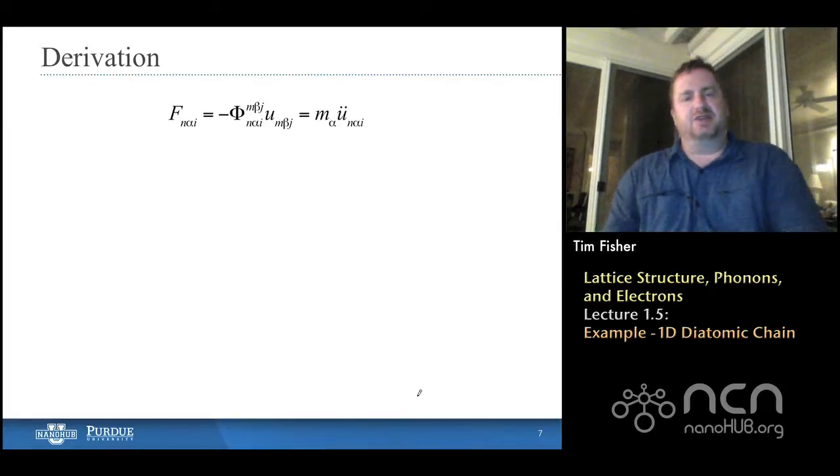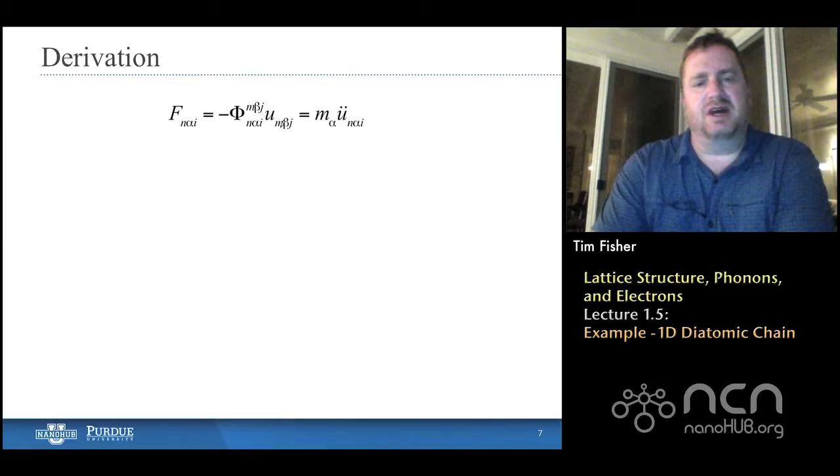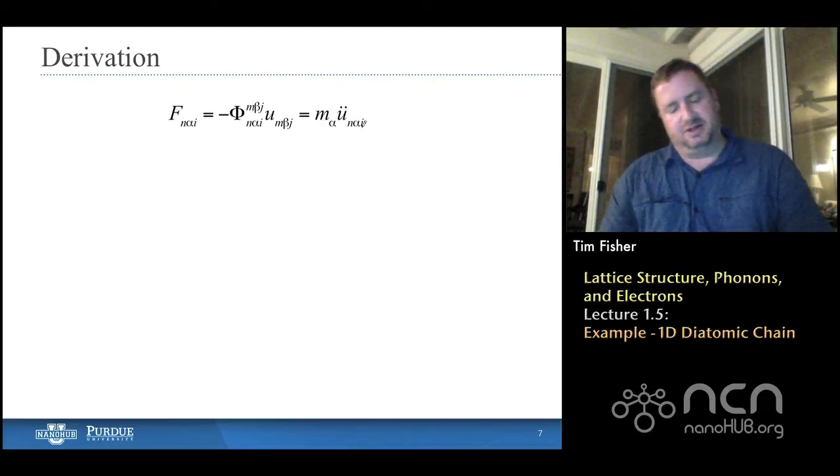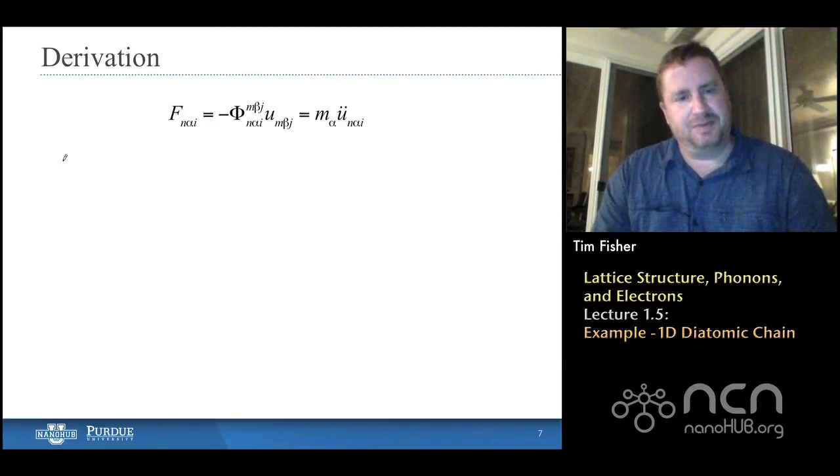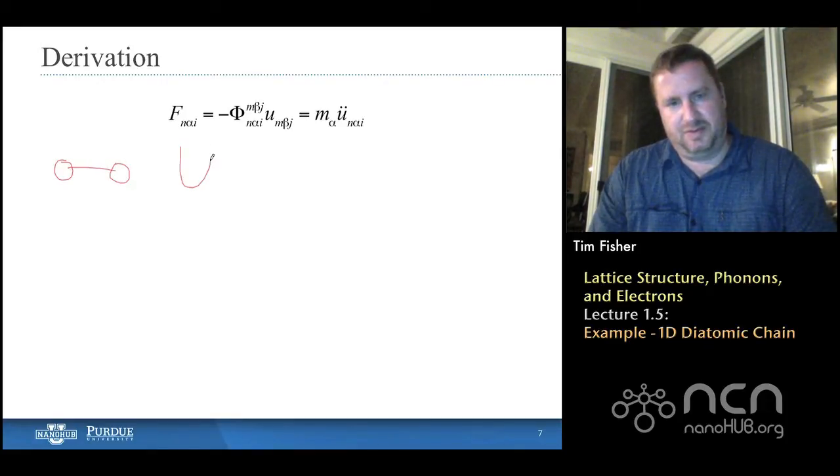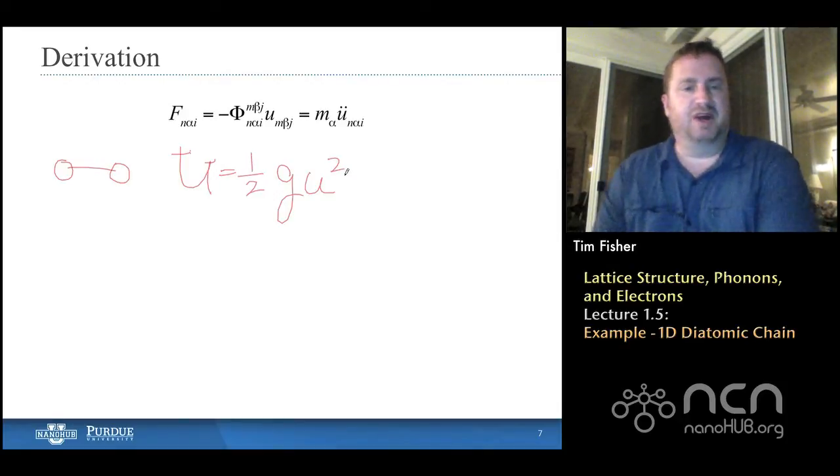So, if we look at this relationship between force, this is what we had earlier. Force equals our phi matrix times the displacement vector, and that's going to equal mass times acceleration. So, if we go back to this and kind of look at this from the fundamentals, let's go back to when we were thinking about two atoms connected by a bond. And we said that the potential energy, at least the harmonic potential energy, could be represented as one-half times the spring constant times U squared, where U was the perturbation away from some equilibrium value of their separation.